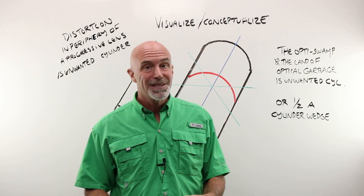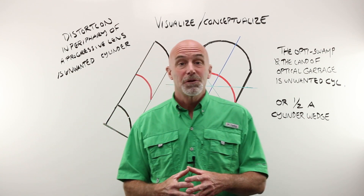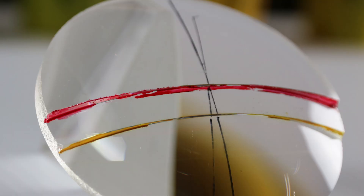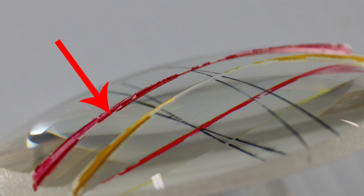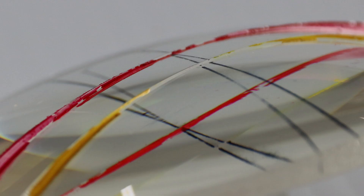I'm going to take that illustration from Daryl Meister's white paper and see if I can help you with the visualization of where cylinder becomes unwanted cylinder, which becomes distortion in the periphery of a progressive. This is very much a visualization-conceptualization piece. I'll show you a plano base curve blending into a very fixed radius curve for the add power in a bifocal — that's how Daryl has it set up. Notice the area where the different radii of curvature are close to one another. As we leave the center line of the lens, the ledge increases sharply.